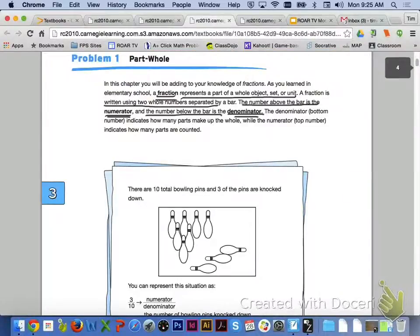Let's take a look at problem 1 on page 96. In this chapter, you will be adding to your knowledge of fractions. As you have already learned, a fraction represents a part of a whole object, set, or unit. A fraction is written using two whole numbers separated by a bar. The number above the bar is the numerator, and the number below the bar is the denominator. The denominator indicates how many parts make up the whole, while the numerator indicates how many parts are counted.